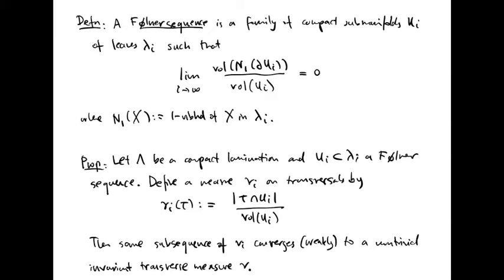Let lambda be a compact lamination and let U_i contained in leaves lambda_i be a Følner sequence. We can define a measure on transversals in the following way. For each transversal tau, define the measure nu_i of tau to be equal to the number of intersections of tau with U_i divided by the volume of U_i.